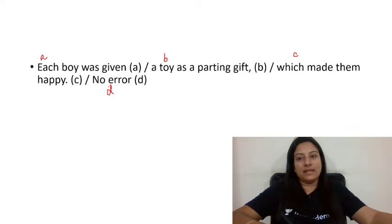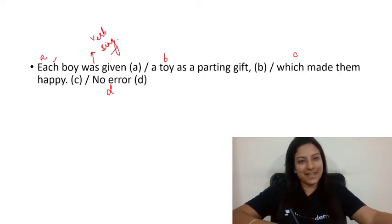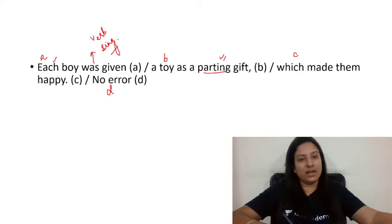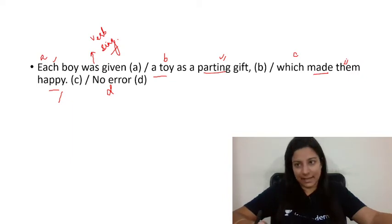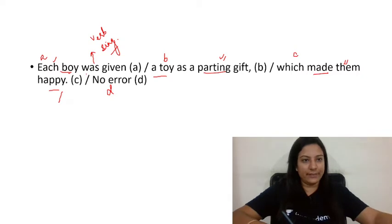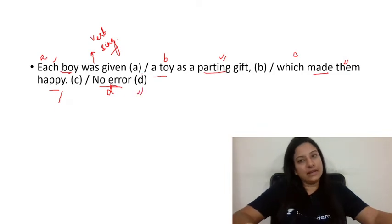Question 4: 'Each boy was given a toy as a parting gift which made them happy.' After 'each', the verb is always singular — 'was' is correctly used. 'Parting gift' means a gift given when someone is leaving — like a return gift. 'Them' is used because there are many boys. The verb is singular because we refer to each individual boy. There is no error in this sentence — it is error-free.